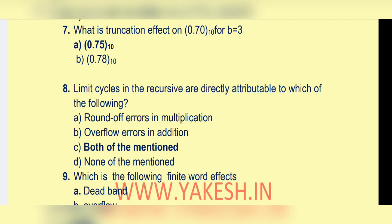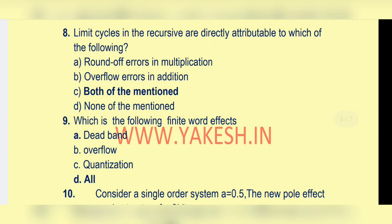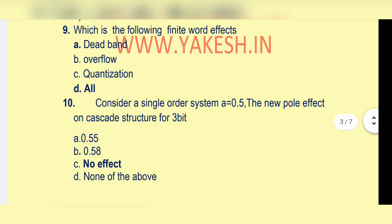Limit cycles in the recursive system are directly attributable to which of the following? Option c: both of the mentioned — round-off error in multiplication and overflow error in addition. Which of the following finite word effects? Option d: all of the above.